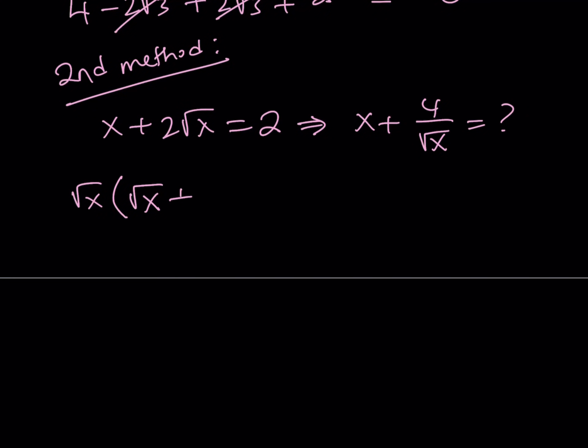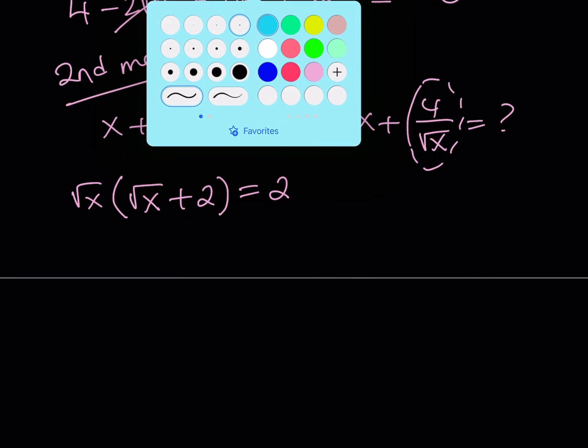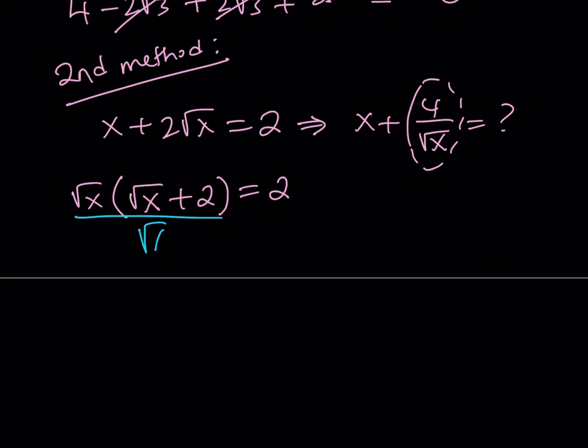Inside the parentheses, we get square root of x plus 2. And then, from here, since I have 4 over root x here, I would like to divide both sides by square root of x because that's going to give me something that I am going to be using. So, let's go ahead and divide by root x. It's also going to simplify the left-hand side.